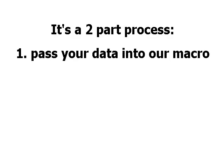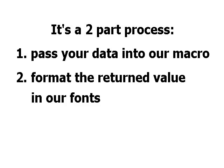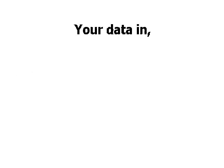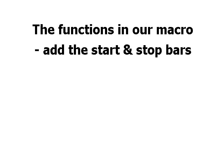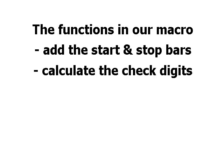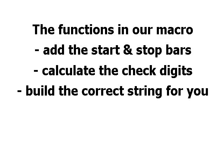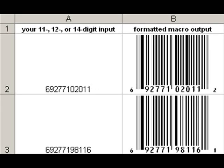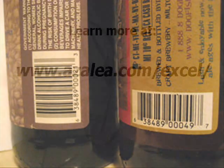Pass your Excel data into our macro's function, format the function's return value in one of our barcode fonts. That's it. Your data goes into our macro, your barcode comes out the other end. Think of our macro as a black box — we convert your input string into a string with all the barcode transformations done for you. Format the return string in one of our barcode fonts, and the start and stop bars, check digit, all that stuff is already made. Cross that off your list.